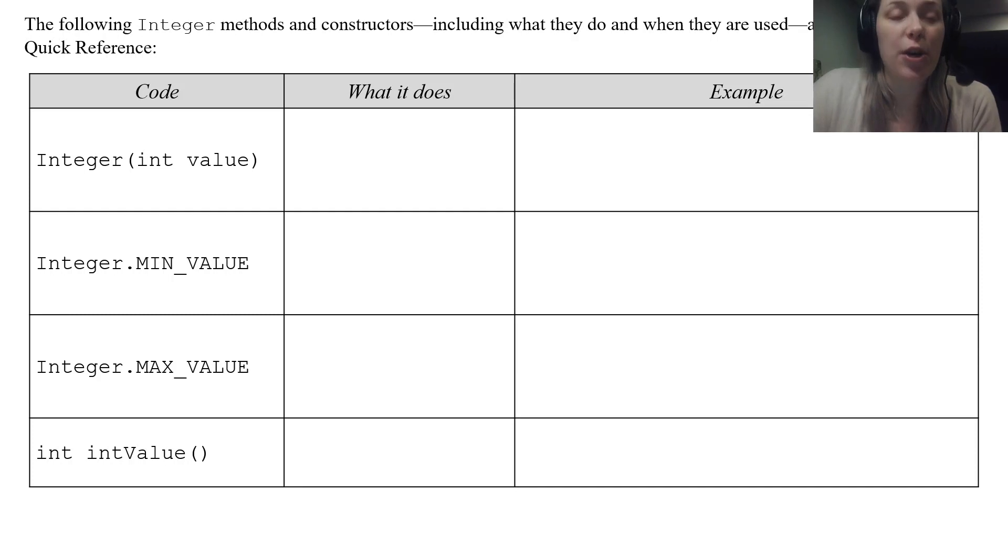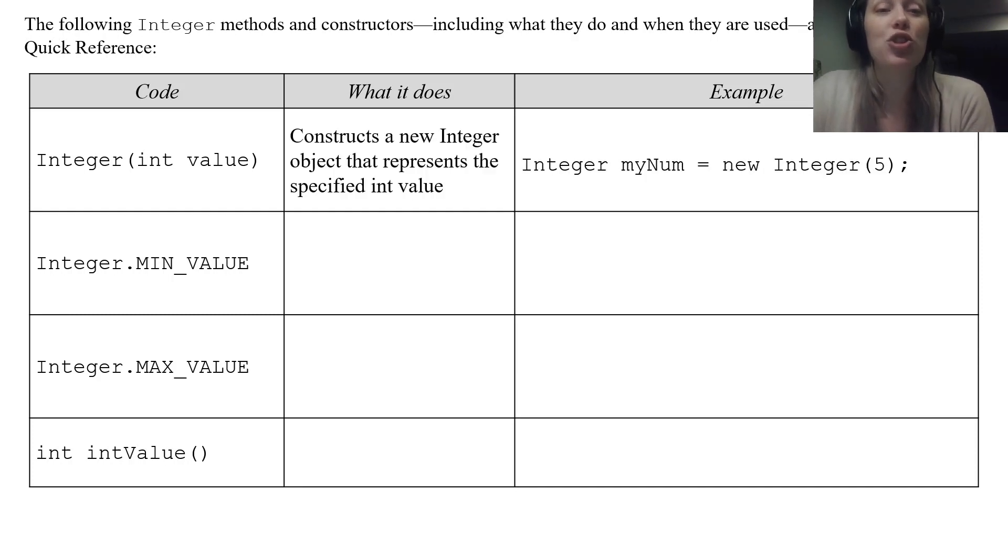So the first one, the first piece of code, it constructs a new Integer object that represents whatever int value you want. So we've been constructing objects for a while now in unit 2, so you recognize that example. This is constructing an Integer object. So it starts off with Integer myNum equals new Integer 5. So you're creating a new Integer object with a value of 5. You're using that Integer constructor.